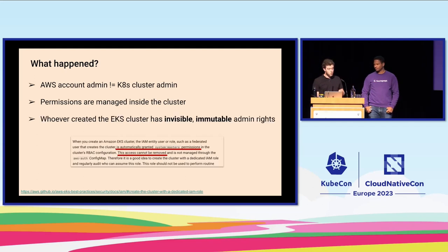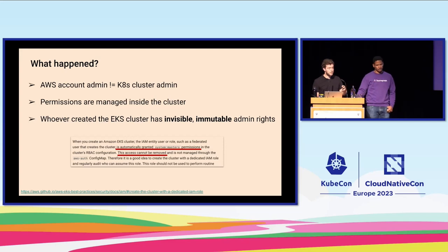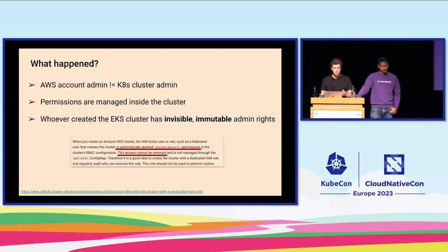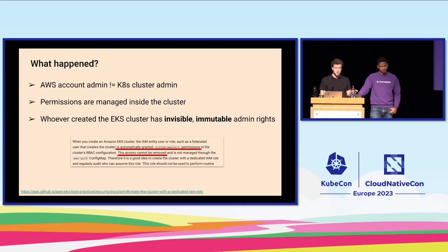This also adds a complexity: whoever creates the AWS EKS cluster has invisible and immutable rights to it. So if it was maybe Kate's friend Jenny who created the cluster two years ago, she will still be a full admin of that, but you don't see it anywhere and you cannot remove it.